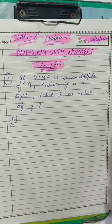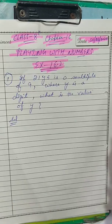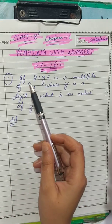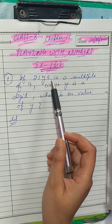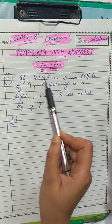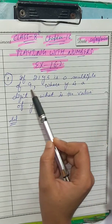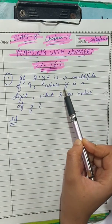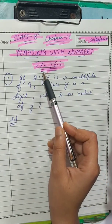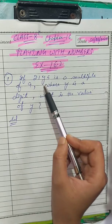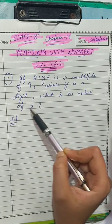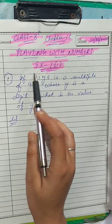Hello students, today we are going to do our next exercise 16.2 from the chapter 'Playing with Numbers' of Class 8. So our first question is: if 21y5 is a multiple of 9, where y is a digit, what is the value of y?